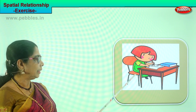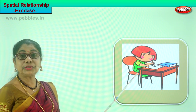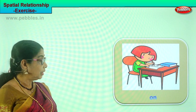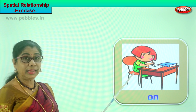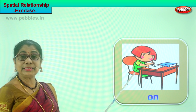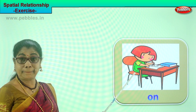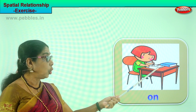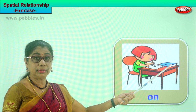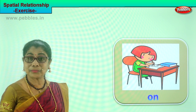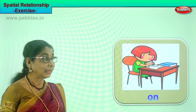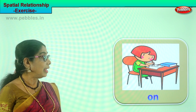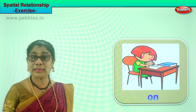Where is she sitting? She is sitting on a chair. Where are the books? They are on the table. She is sitting on a chair and she is busy doing her work.